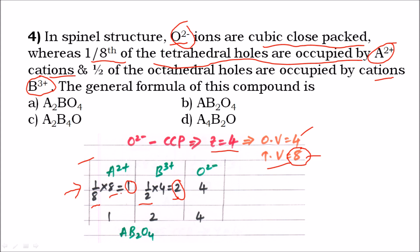We can verify using charges: A²⁺ gives +2, B³⁺ gives +6, total positive charge is +8. To balance, we need eight negative charges, requiring four oxide ions. So the formula is AB₂O₄, and the right answer is option B.